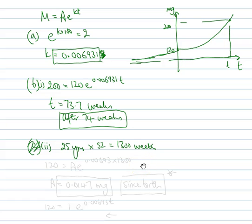But let's do this one first. In this case, we know that it's 120 now, and we don't know what the original value is, but we know that 0.00693 times how many weeks? 1300 weeks. If we solve that, we get a value of A of 0.0147 milligrams.